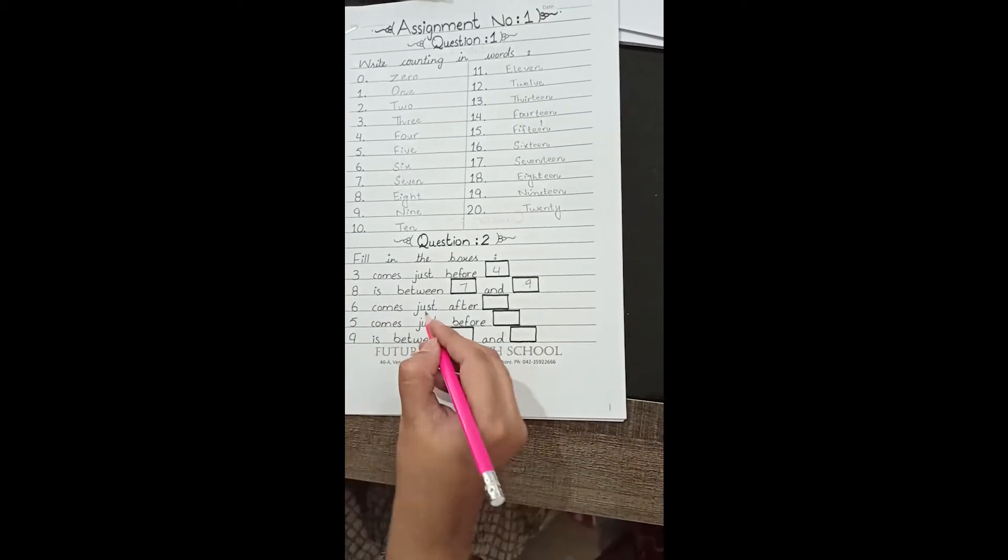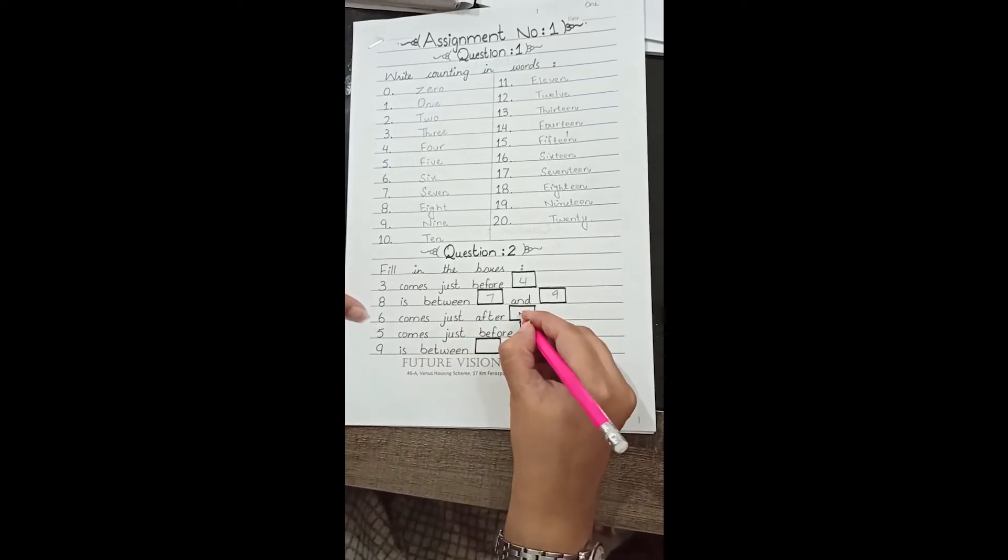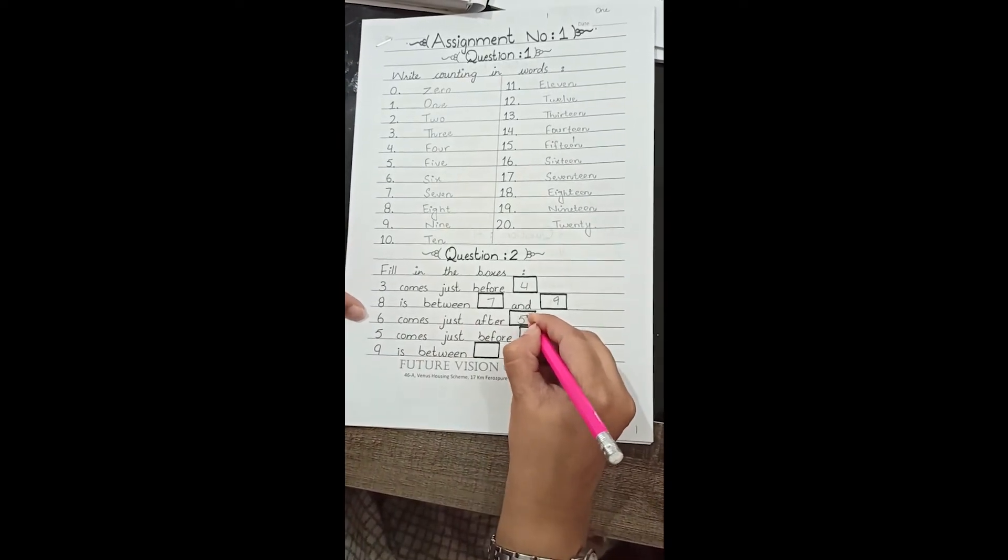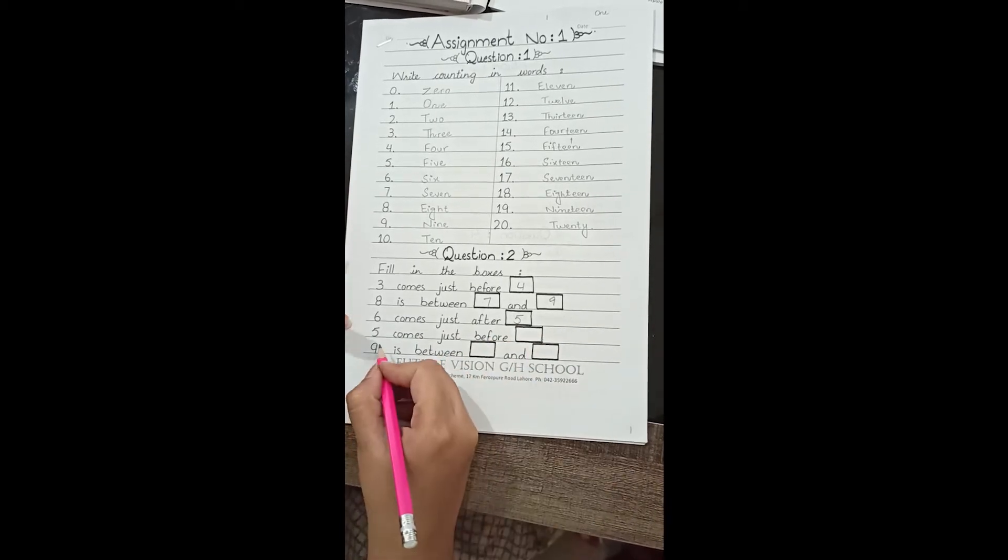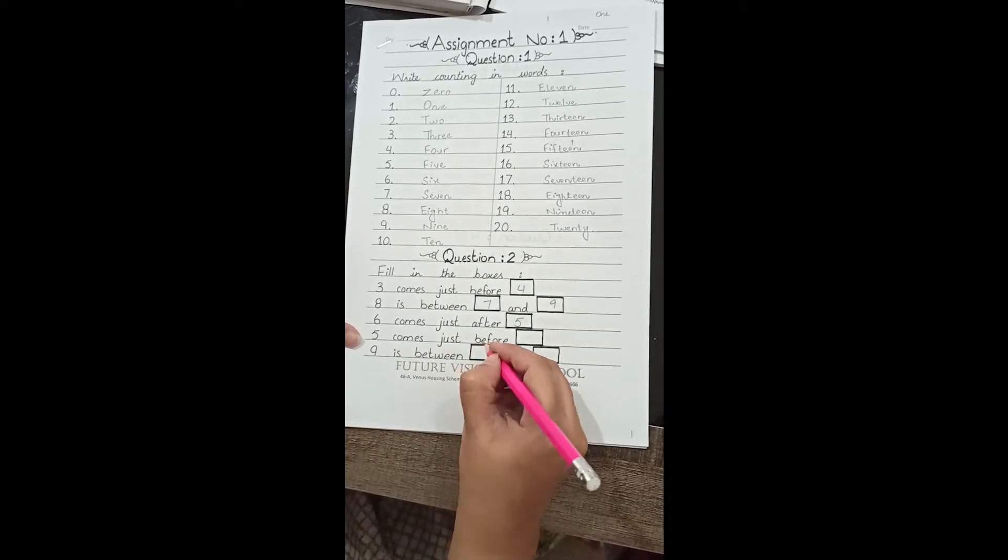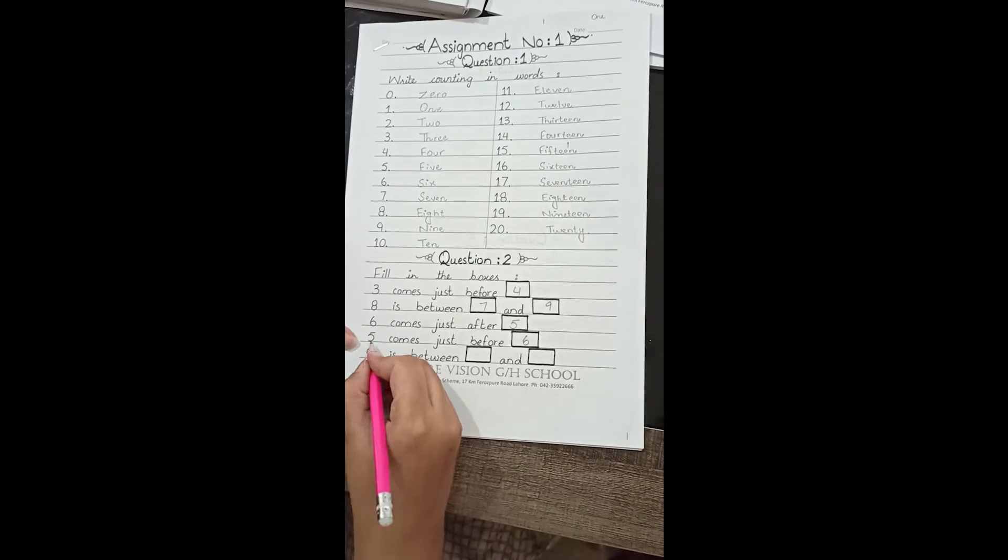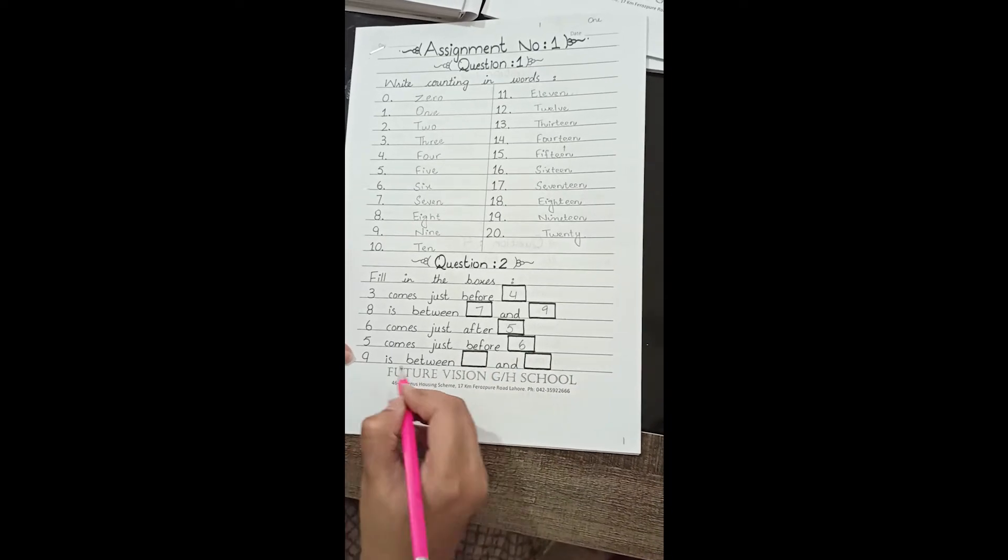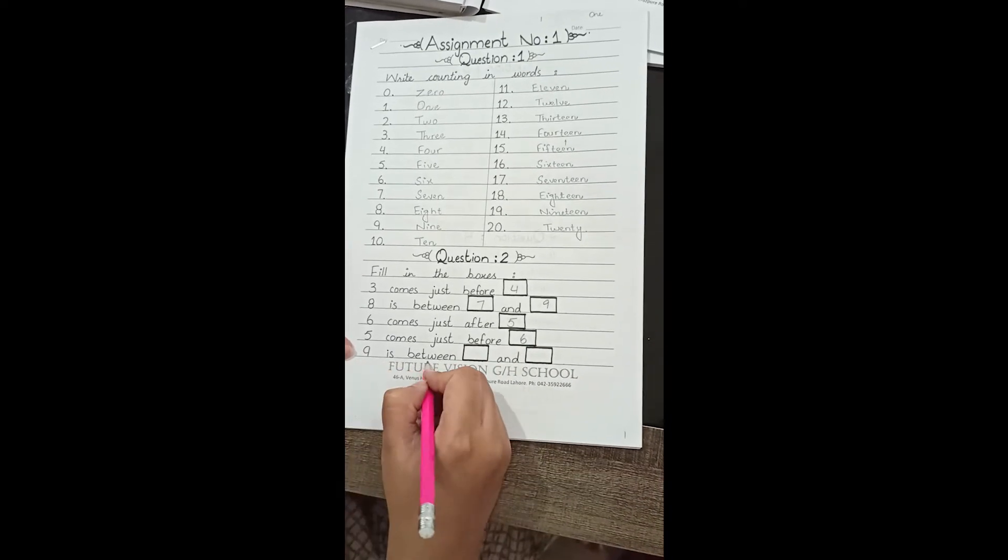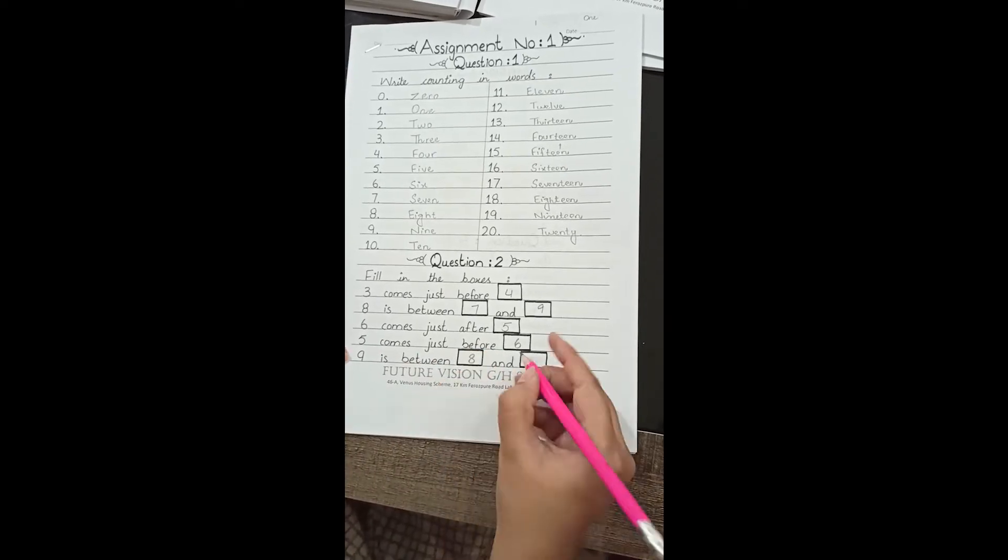5 comes just before what? 5 comes just before 6. 9 is between what? 9 is between 8 and 10.